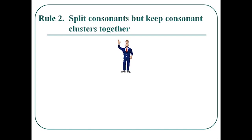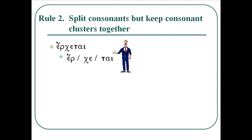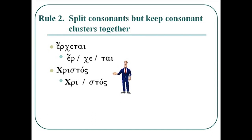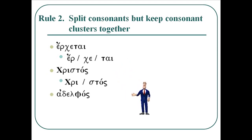The second rule is you split two consonants but keep consonant clusters together. So for example, it's er-ke-tai — the rho and the chi are split, two consonants, you split them. It's kris-tos: the kri is followed by sigma-tau, which are kept together rather than split because they're a consonant cluster, very similar to the word best ending with ST in English. Adelfos: notice the split between the lambda and the phi — two consonants, you split them.